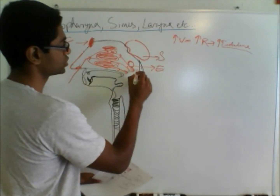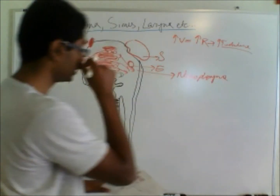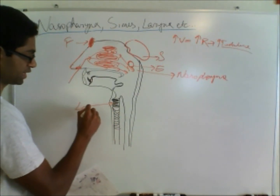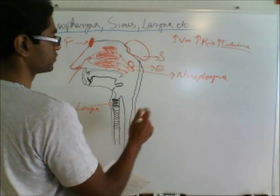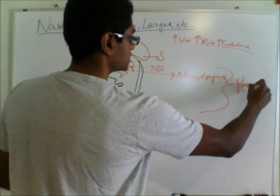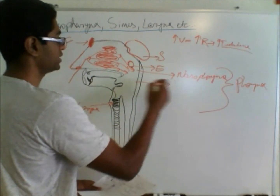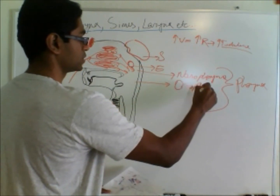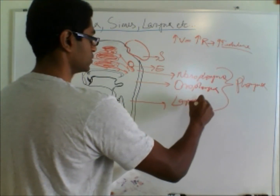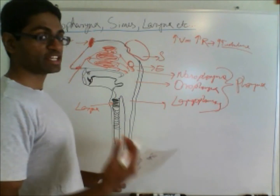This first area right here is known as the nasopharynx. The whole general area from here all the way down to the larynx — the voice box — is called the pharynx. The pharynx is divided into three areas: the nasopharynx up top; right behind your mouth is the oropharynx; and right next to the larynx is the laryngopharynx. That's basically the area where food and air share the same space.